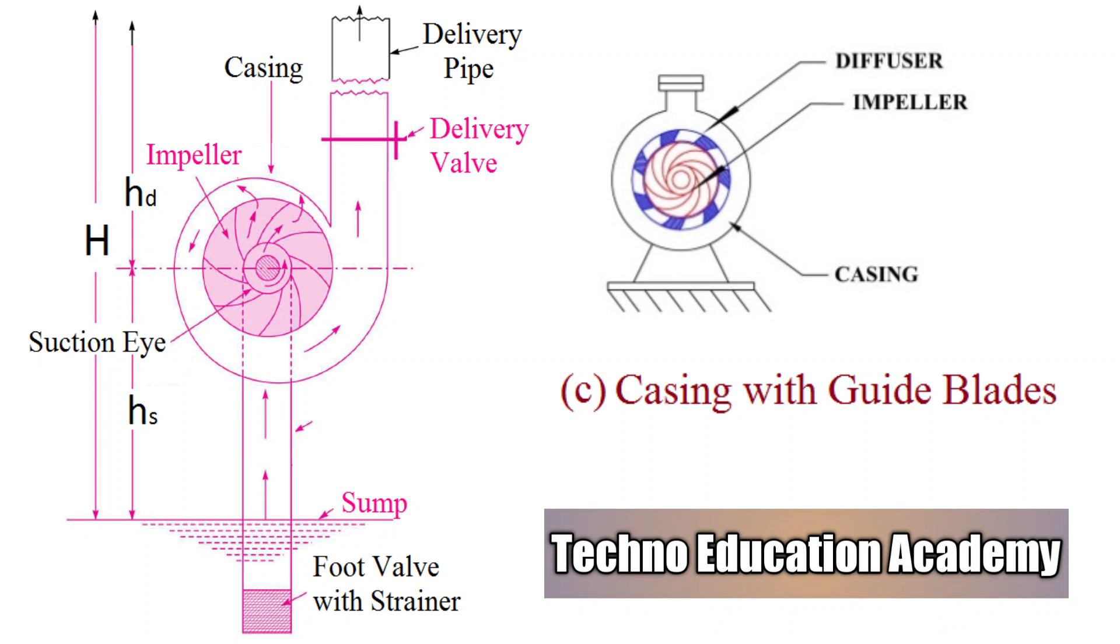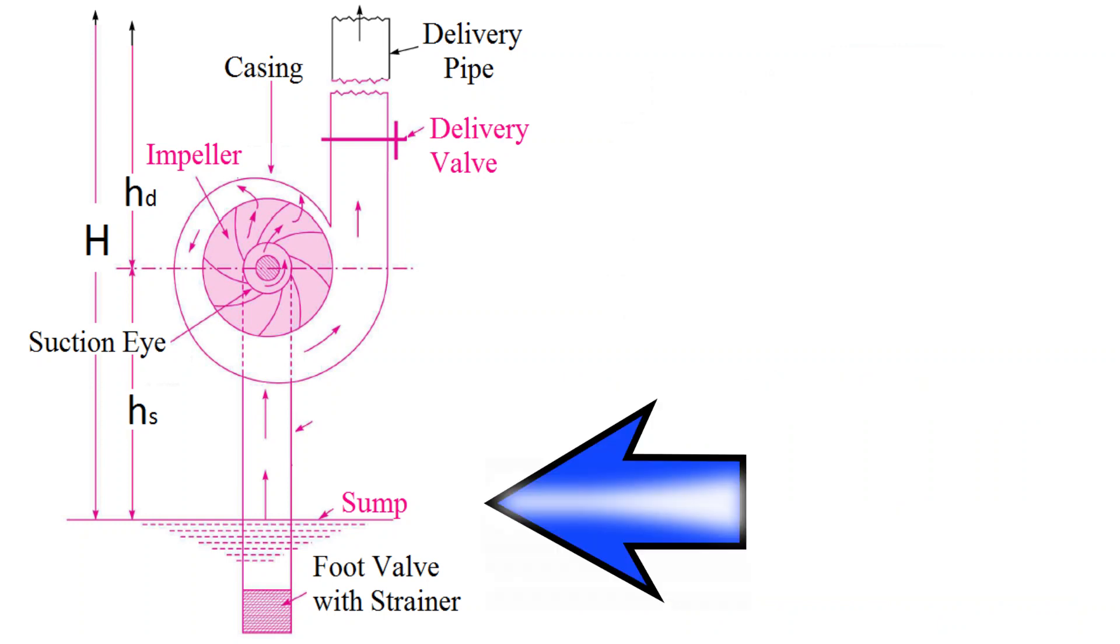Third part of centrifugal pump is suction pipe with footwall and strainer. A pipe whose one end is connected with the inlet of the pump and other end dips into water in a sump is known as suction pipe. The footwall opens only in upper direction. A strainer is also fitted at the lower end of the suction pipe to remove the impurities during suction.